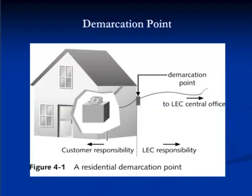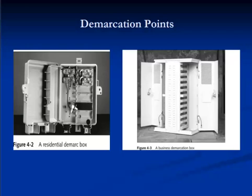Outside plant refers to the system of cables, poles, towers, and other connectivity equipment between the demarcation point and the central offices, or COs. Included in outside plant are the demarcation point, local loop, and service area concepts. The demarcation point indicates where the LEC's responsibility for a line ends and the subscriber's facilities begin. Also known as a network interface device, the demarcation point is usually contained within a demarcation box to protect it from tampering and environmental damage. Examples include a residential demarcation box and a larger demarcation box usually found in business locations.